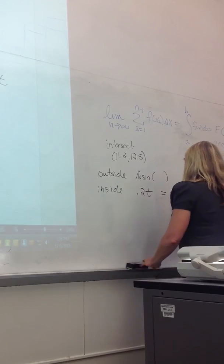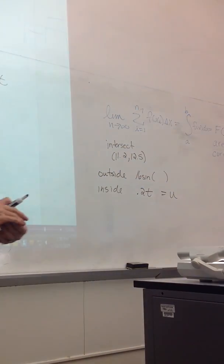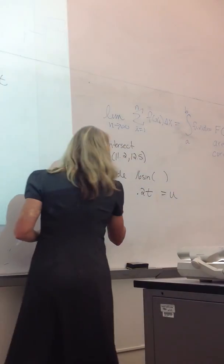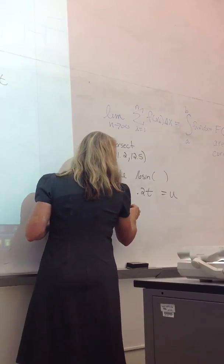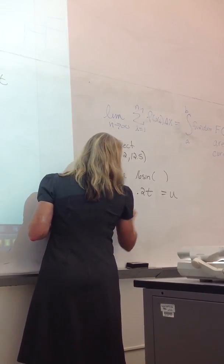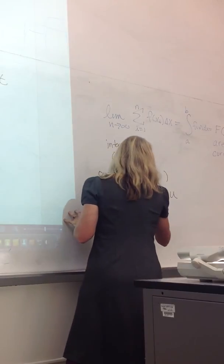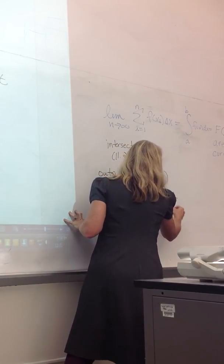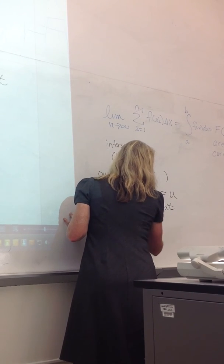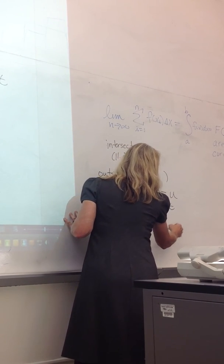So I call the inside function u, and then du would be 0.2, so du is 0.2dt, so du divided by 0.2 is your dt.